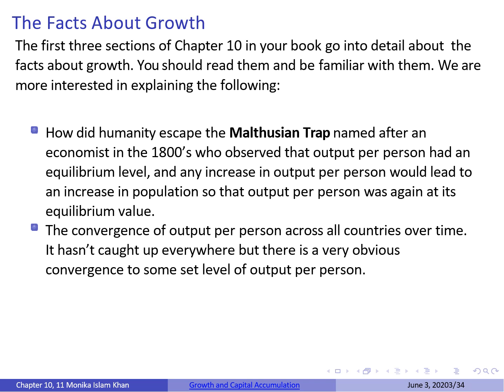For OECD countries, there is clear evidence of convergence. Convergence is also visible for many Asian countries, especially those with high growth rates — for example, Singapore, Taiwan, South Korea, and Hong Kong. However, most African countries were very poor in 1960, and some even had negative growth rates between 1960 and 2011, partly due to internal or external conflicts.